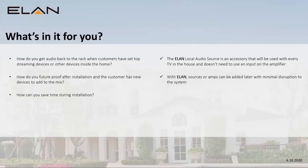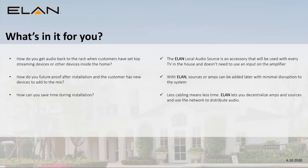Saving time during installation is really important — how do we save time means saving money. Less cabling means running fewer cables, which costs less and allows you to decentralize everything as needed. Elan auto-discover makes this really easy. The devices plug into the network just like any other Elan device, they show up in the discovery tab in Elan, you click install and you're ready to go. Configure your zones and you're out the door.